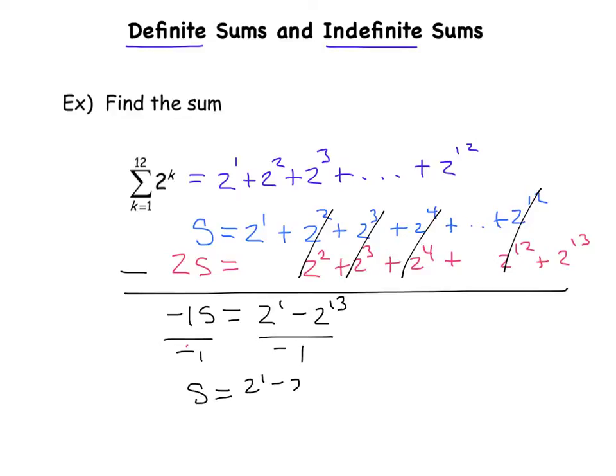2 to the 1 minus 2 to the 13 divided by negative 1, which if I wanted to I could rewrite it like this. That gets me, I'm just going to put this in my calculator, gets me that.